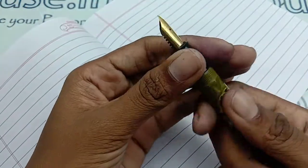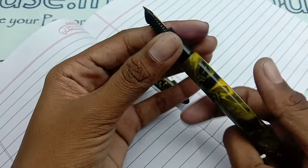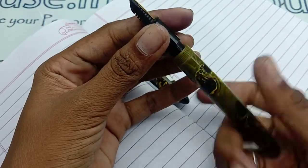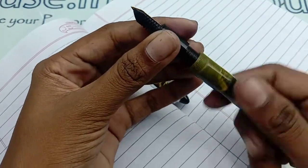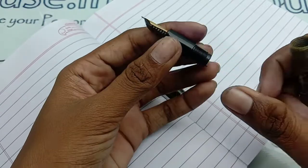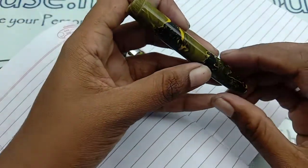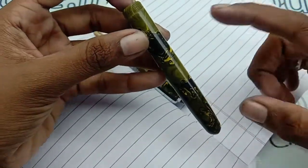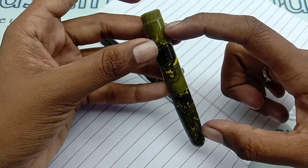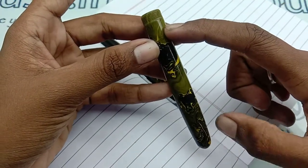Coming to the thread portion, you can apply silicone grease or vaseline for the long life of this thread portion. For ink quantity level, you can fill the ink till here, not above this thread portion.